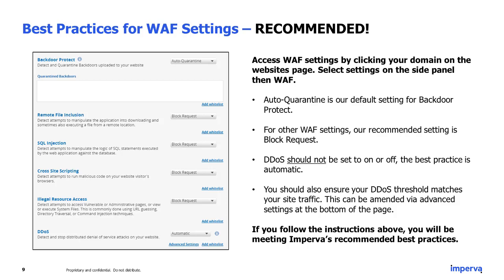Let's look at the options for your WAF settings. 'Auto Quarantine' is the default and recommended setting for backdoor protection. For your other WAF settings, the recommended setting is 'Block Request.' DDoS should not be set to 'On' or 'Off' — the best practice from Imperva is 'Automatic.' You should also ensure that your DDoS threshold matches your website's traffic, which can be amended via advanced settings at the bottom of the page. Following these instructions means you are meeting Imperva's recommended best practices.